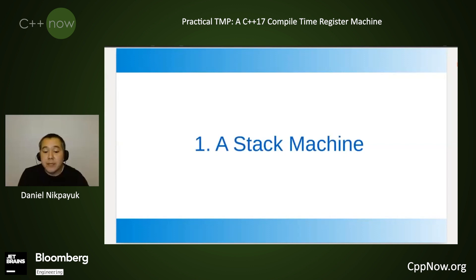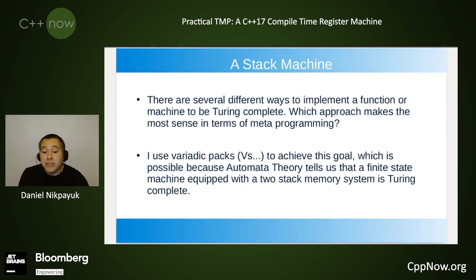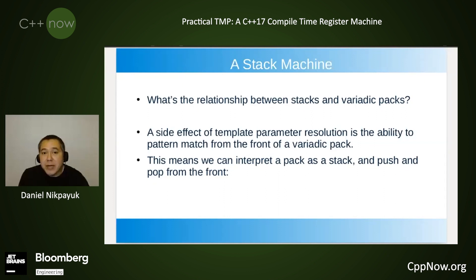Starting with theory and the stack machine: there are several different ways to implement a function or machine to be Turing complete. We have to ask which approach makes the most sense in terms of C++ template metaprogramming. I myself use variadic packs to achieve this goal, which is possible because automata theory tells us that a finite state machine equipped with a two-stack memory system is Turing complete.